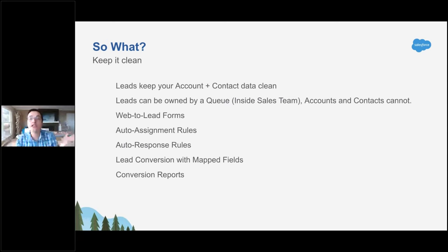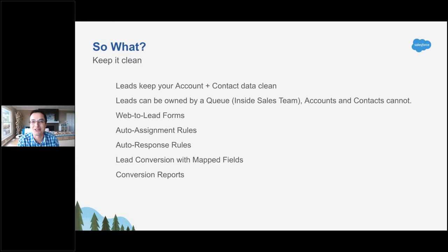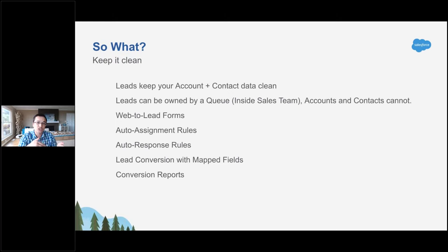For example, who can own a lead? When a lead comes in, you can assign it to your inside sales team — whoever calls them back first, it doesn't matter. You can't do that with accounts and contacts; those have to be assigned to a specific person. So leads can be owned by a queue — your Spanish-speaking team, your product expert team, your BDRs, SDRs. We also give you features to help you get people from your website into Salesforce, get them assigned to the right people, and get them responses — all in those early stages of the sales cycle.